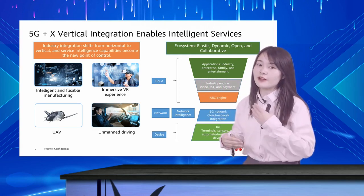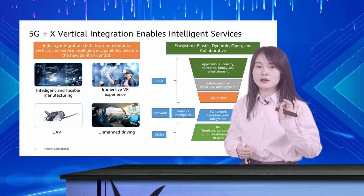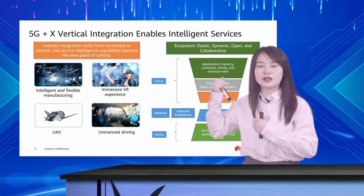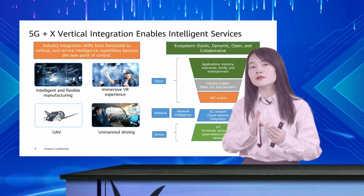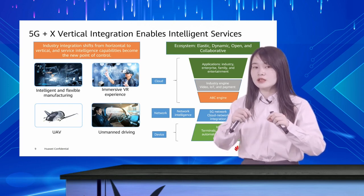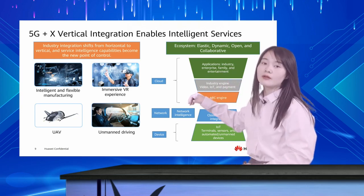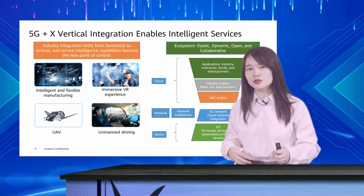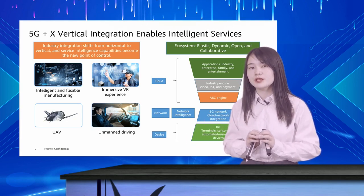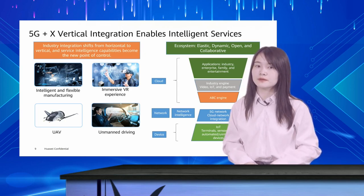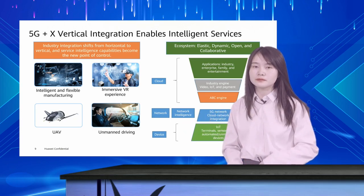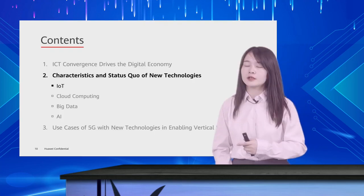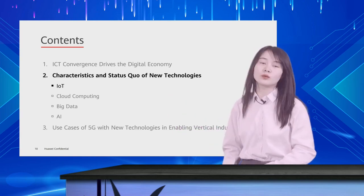In the smart factory, sensors are used to connect people, machines, and materials. The data is then transmitted to the cloud through the network — such as 4G and 5G — to form industrial big data. Based on that data, the processes, throughput rates, and energy consumption of the factory are analyzed and optimized to improve efficiency. 5G will play a significant role in the future. We have now covered the digital economy and ICT technologies.